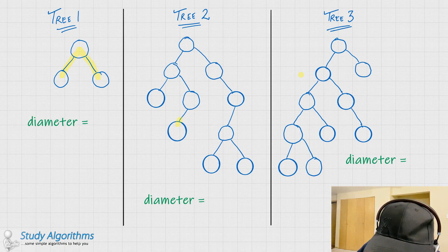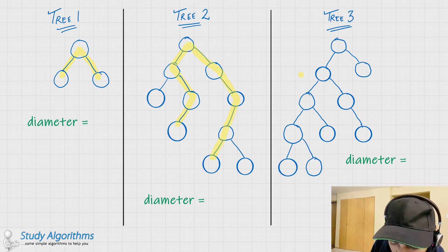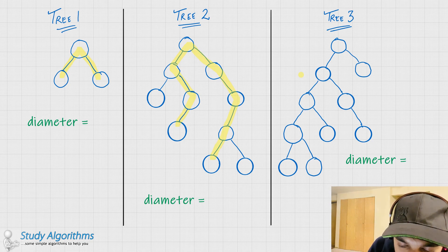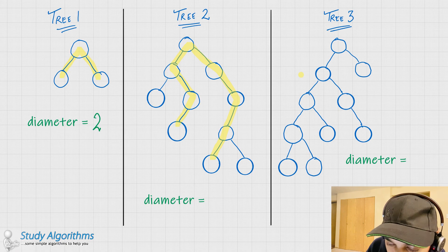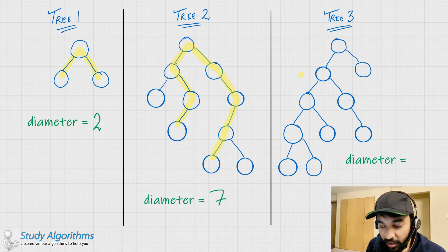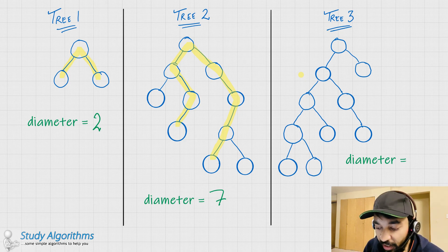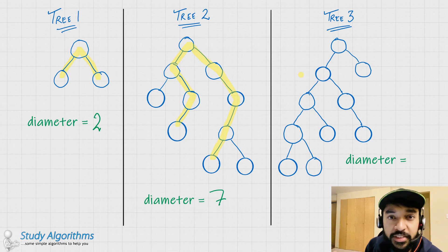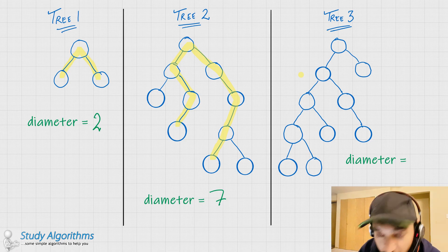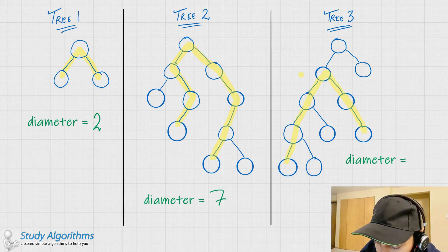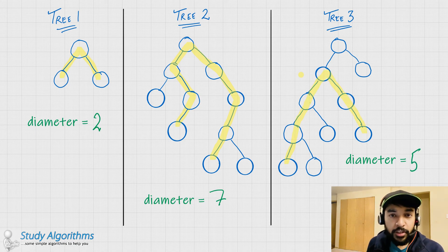For tree number one, our distance is 2, and for tree number two, our distance is 7. But please note that it is not necessary that the longest path would include the root node. A good example of this can be seen in tree number three. In tree number three, the longest path would look something like this, and it has a length of 5. So this is how you define the diameter of a binary tree.